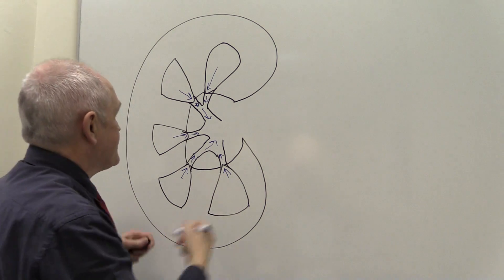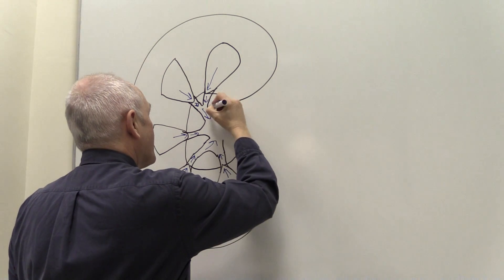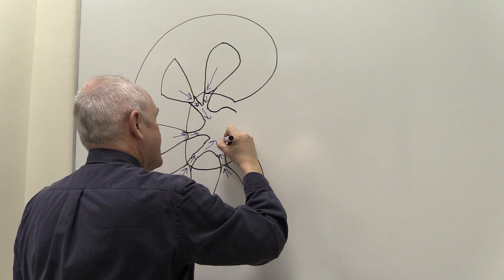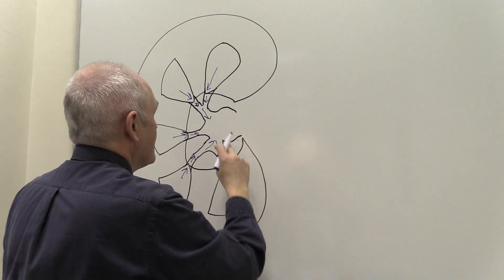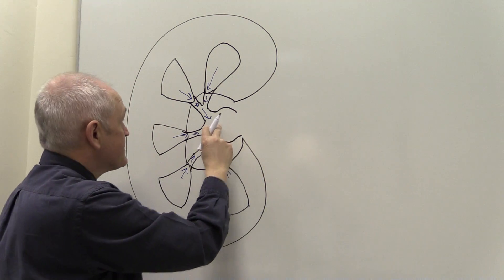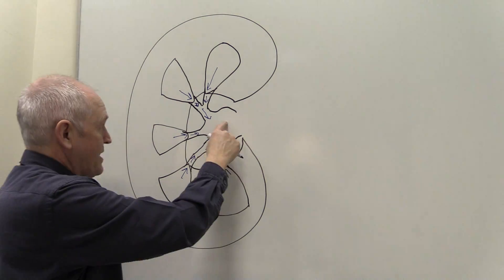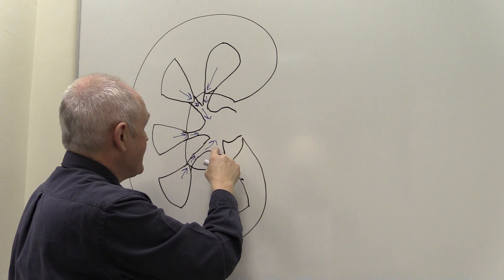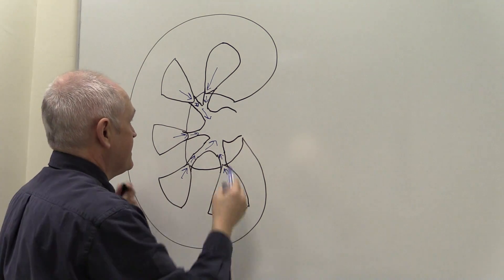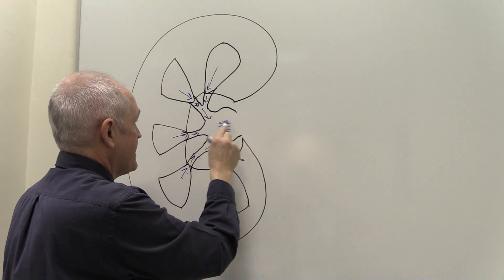And then all of this is going to collect in an enlarged area called the renal pelvis. So this is an enlarged area called the renal pelvis. So the major calyces drain into the renal pelvis here.